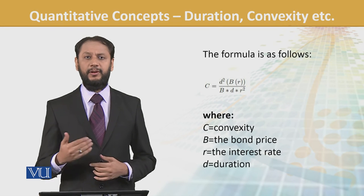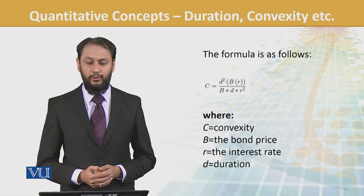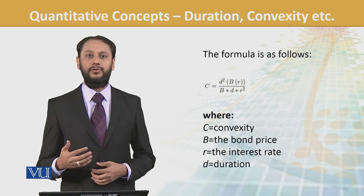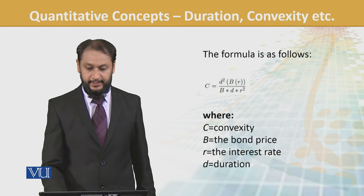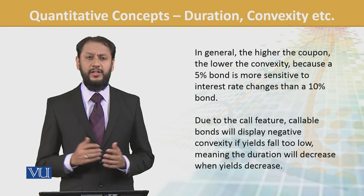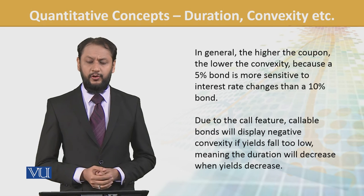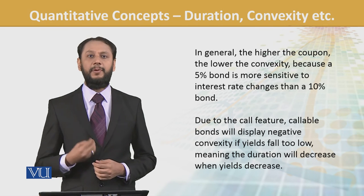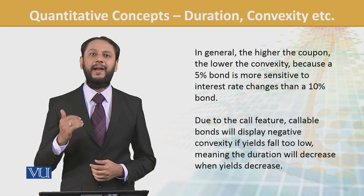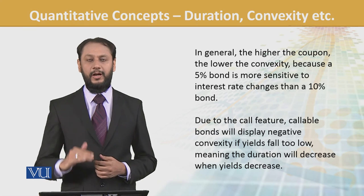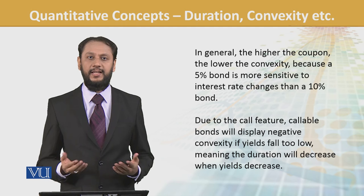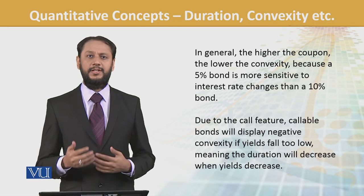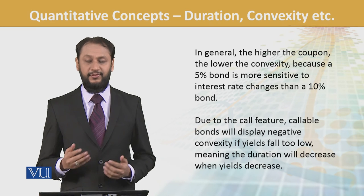For the formula, we don't need to memorize it but we need to understand it: by refining and using duration, we can come up with convexity, and that's the actual expected impact. In general, higher coupon means lower convexity — because when coupons are higher, payments are spread out more, reducing the convexity impact. Low coupon means higher convexity. Similarly, zero coupon bonds will be on the higher side of convexity, and certain features will further differentiate the impact.